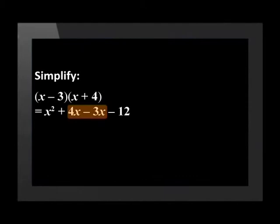We have like terms. And to completely simplify, we add those like terms. And our answer is x squared plus x minus 12. Now that we're warmed up, let's do an example that people often get wrong.